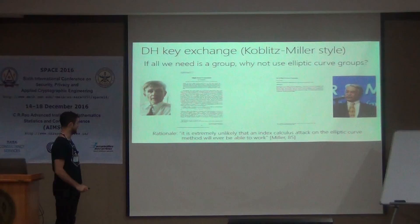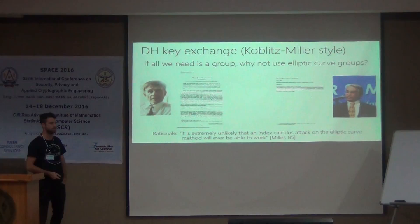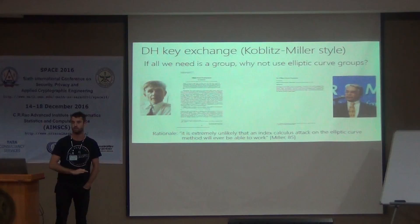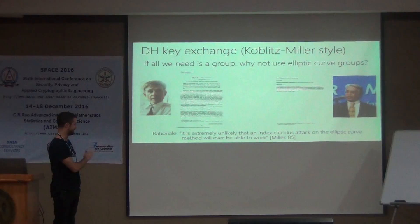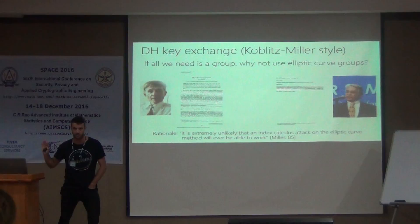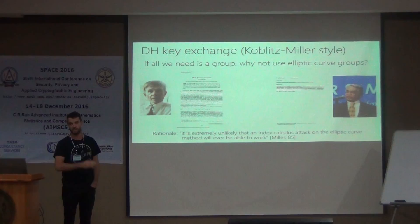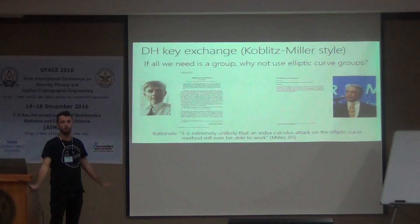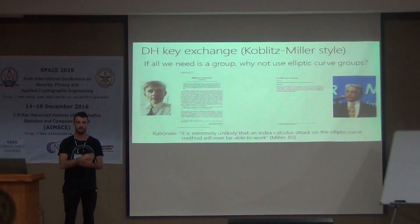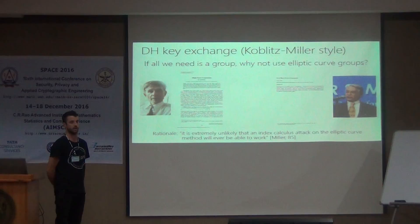Koblitz and Miller both said: why not use elliptic curve groups? There were two papers in the 80s proposing public key cryptography using elliptic curves. Miller noted that it is extremely unlikely that any sort of index calculus attack will ever work against elliptic curves. With certain technical exceptions that remains correct to this day. Essentially, the best attack known when elliptic curves were proposed is still the best attack known now, and it's generic. While RSA and finite field cryptography has suffered increasingly better attacks, elliptic curves have stood the test of time with no known attack better than the generic attack.